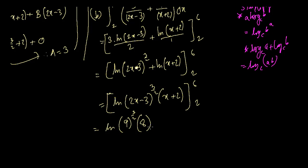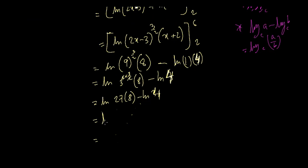Minus, now we can put 2, ln(27×8), minus means division, 4.